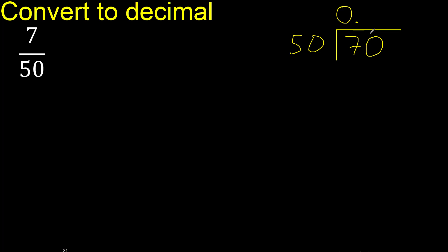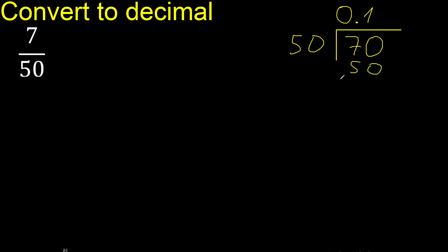Place the point only once. 70 is not less than 50, so we find which number 50 multiplies to nearest 70. Multiplied by 2 is 100 — that is greater. Therefore try another number: multiplied by 1 is 50 — not greater. Subtract: 70 minus 50 is 20.